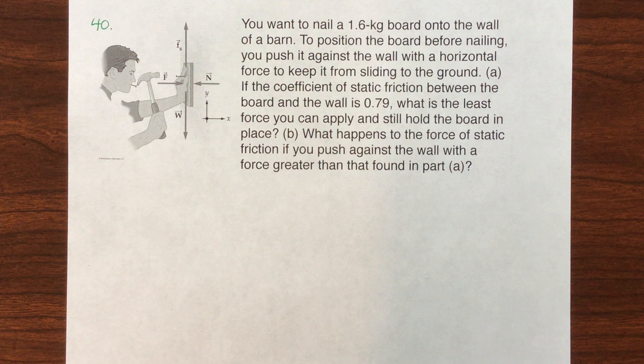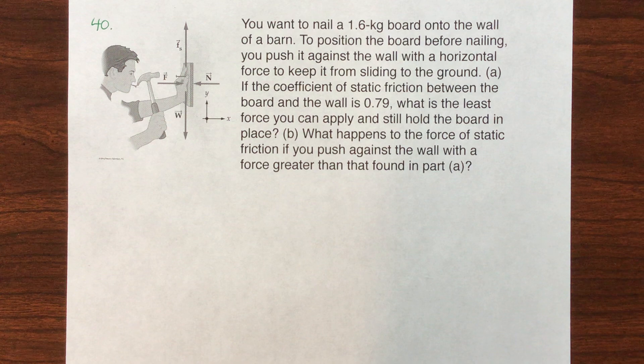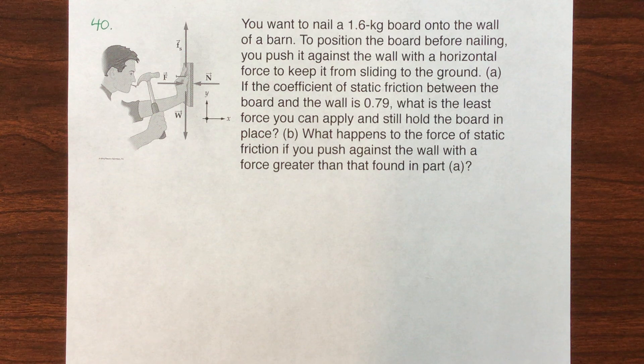You want to nail a 1.6 kilogram board onto the wall of a barn. To position the board before nailing it, you push against the wall with a horizontal force to keep it from sliding. The coefficient of static friction between the board and the wall is 0.79. What's the least force you can apply to hold the board in place?